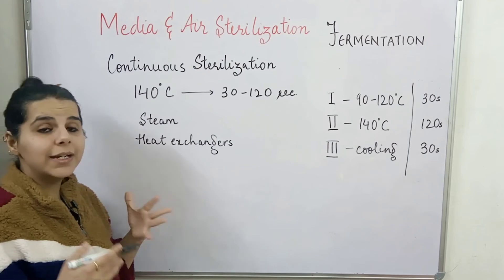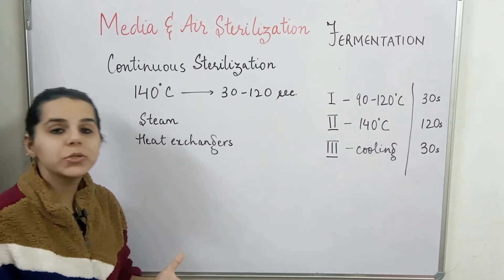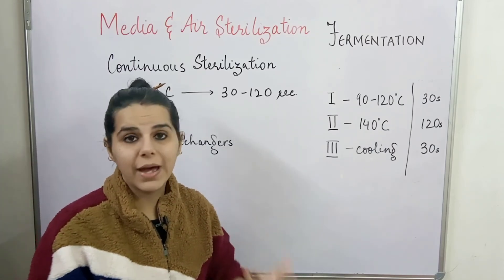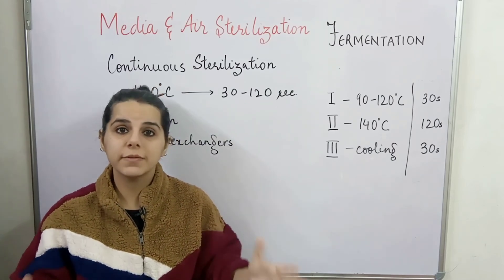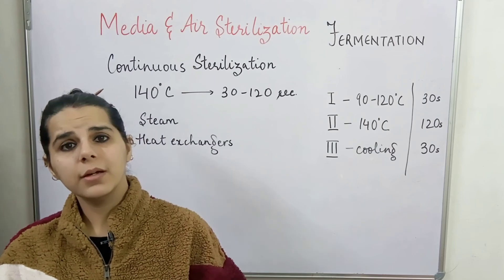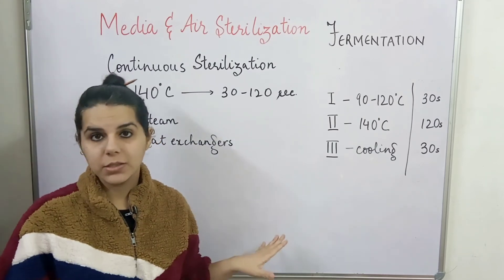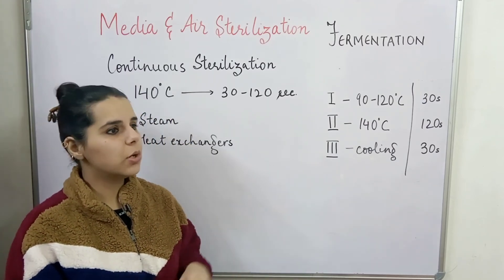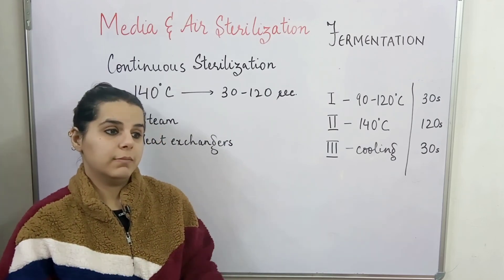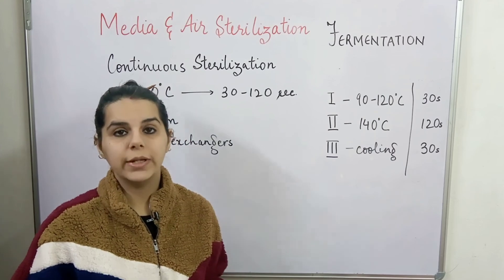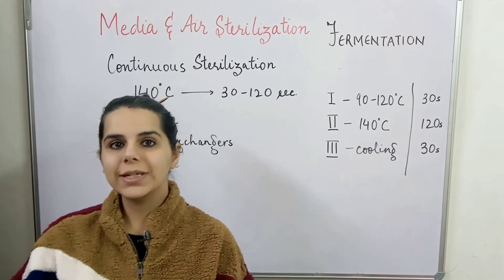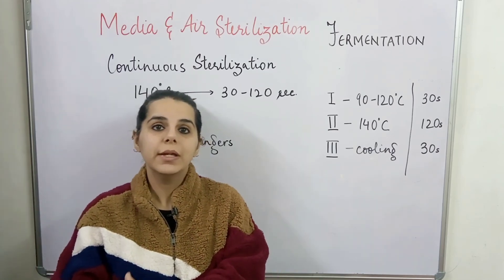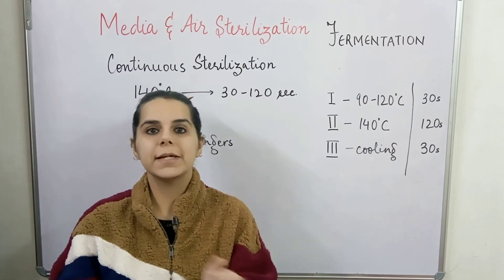One major advantage of continuous sterilization is that 80 to 90 percent of the energy is conserved, since there are no batches and the sterilization time is very short. However, a disadvantage is that due to rapid temperature fluctuations — heating followed by instant cooling — certain components precipitate out, such as calcium, which precipitates as calcium oxalate.